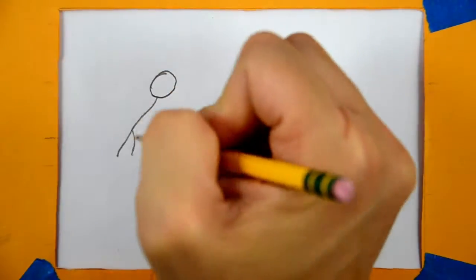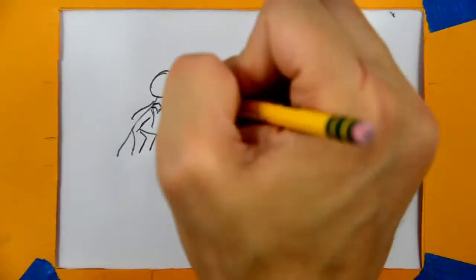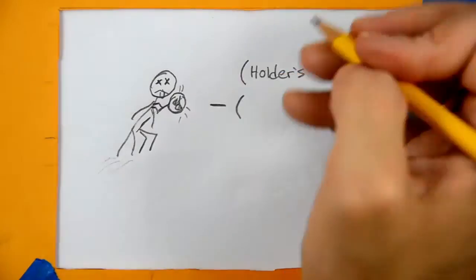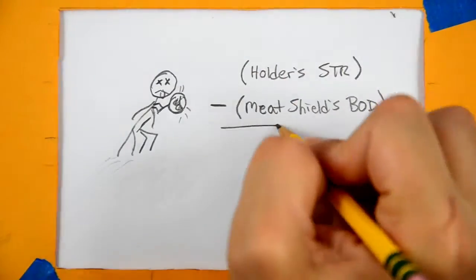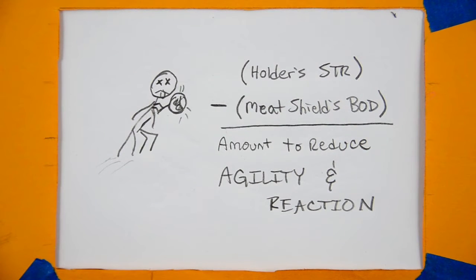It should first be noted that carrying around a body or forcing a person to be a meat shield is not an easy task. The character will need to apply an agility and reaction penalty equal to the difference between the holder's strength and the body attribute of the meat shield.